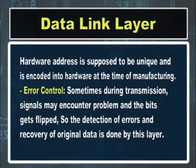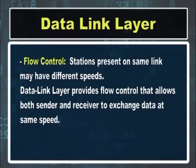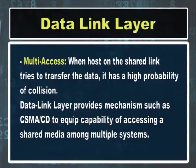The third function is error control. Sometimes during transmission, signals may encounter a problem and the bits get flipped, so the detection of errors and recovery of original data is done by this layer. The next function is flow control. Stations present on the same link may have different speeds, so the data link layer provides flow control that allows both sender and receiver to exchange data at the same speed. The last function is multi-access. When a host on a shared link tries to transfer data, it has a high probability of collision. Data link layer provides mechanisms such as CSMA/CD to equip capability of accessing a shared media among multiple systems.